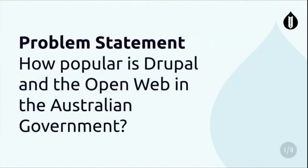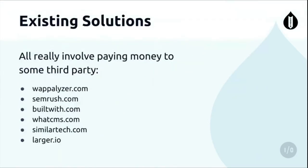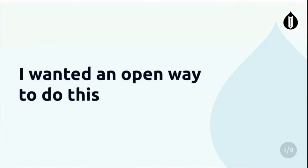So here's my problem statement. I wanted to measure popularity, which is tricky - it's not exactly easy to do. And I didn't want to pay anyone any money. You could probably go pay SEMrush a bunch of money and probably get a report that's probably wrong immediately. So I wanted something a bit different - I wanted it to be open source and reproducible, and I wanted to see under the hood.